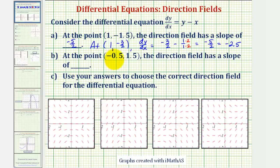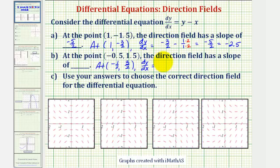Next, at the point (-0.5, 1.5), the direction field would have a slope of what value? So again, at the point (-1/2, 3/2), dy/dx would be equal to y minus x, or 3/2 minus (-1/2).